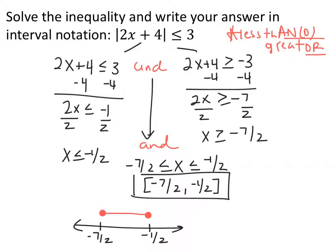Splitting the two inequalities and subtracting 4 from both sides: the first gives 2x ≤ -1, and the second gives 2x ≥ -7. Dividing both by 2: x ≤ -1/2 AND x ≥ -7/2. Written as a compound inequality: -7/2 ≤ x ≤ -1/2. The interval notation is [-7/2, -1/2], with closed brackets on both ends — and that's what the graph looks like.